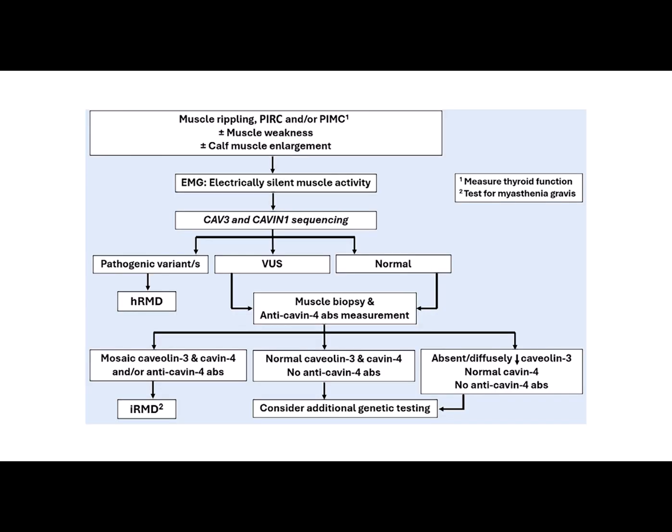Finally, here is a proposed algorithm for the approach to patients with suspected rippling muscle disease. If a patient presents with muscle rippling, percussion-induced rapid muscle contraction with or without percussion-induced muscle mounding, which is not due to hypothyroidism, and EMG shows electrically silent muscle activity, then sequencing of caveolin-3 and cavin-1 genes should be the next step to look for hereditary rippling muscle disease. If gene sequencing is inconclusive, then proceed to muscle biopsy and cavin-4 antibody measurement. A mosaic caveolin-3 and cavin-4 immunoreactivity is suggestive of immune-mediated rippling muscle disease and should be treated with immunotherapy.